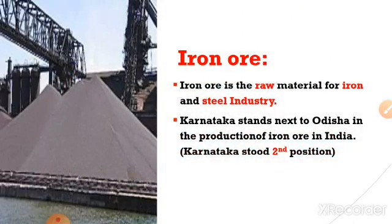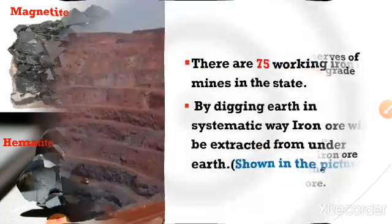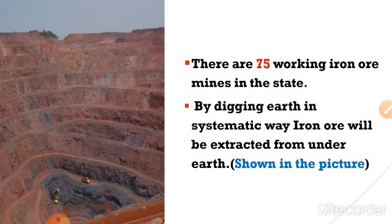The first mineral is iron ore. Iron ore is the raw material for the iron and steel industry. Odisha is the leading producer of iron ore in India with 120 million tons per year. Karnataka ranks second after Odisha. Based on quality, iron ore is divided into two types: magnetite iron ore and hematite iron ore. Magnetite is the high-grade iron ore and hematite is the second-grade iron ore. Karnataka has 75 working iron mines and produces 63% magnetite and 37% hematite iron ore.